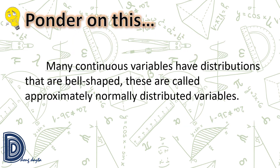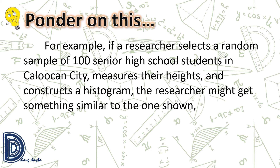Let us introduce the lesson. Many continuous variables have distributions that are bell-shaped. These are called approximately normally distributed variables. For example, if a researcher selects a random sample of 100 senior high school students in Caloocan City, measures their heights, and constructs a histogram, the researcher might get something similar to the one shown.